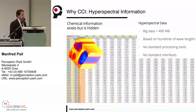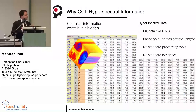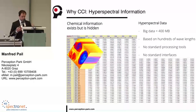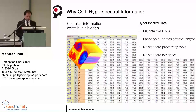What can we do? We can use hyperspectral cameras. Looks complicated — it is. We know that in hyperspectral data there is a lot of chemical information hidden. Hyperspectral data is based on hundreds of wavelengths. On the color image we had one megabyte; now we have 400 megabytes, and there are no standard processing tools to handle this data.